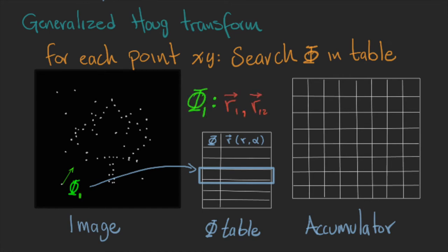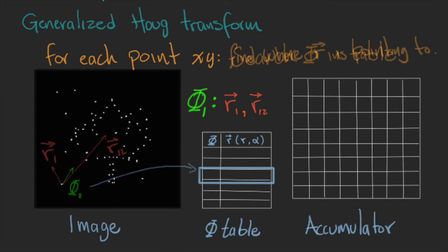And also that for each angle phi, we can have different numbers of vectors r. In this case, we have two. Each of these vectors are pointing to the possible location of the anchor point.